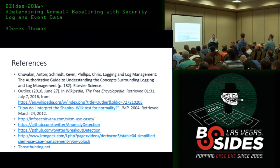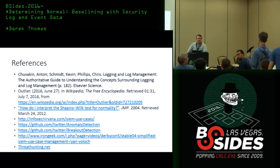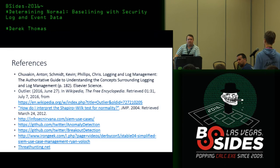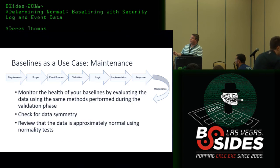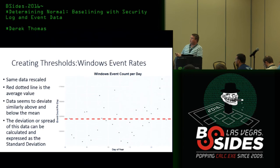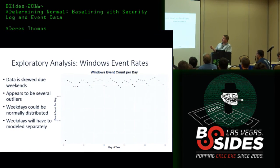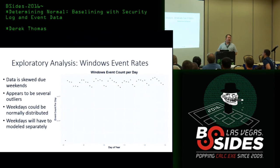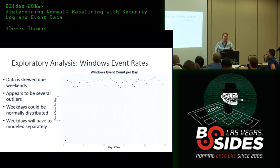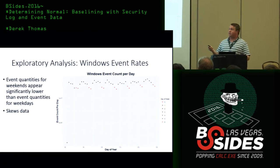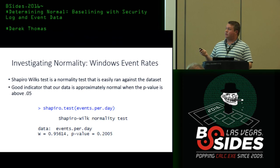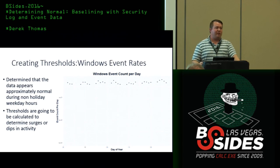Q&A: Someone asks whether it makes more sense to separate weekday and weekend data rather than drawing a mean across both — so you only evaluate weekend data on a weekend-only graph. Absolutely — you determine that through exploratory analysis, and in some cases it may not change from weekend to weekday. Once I determined which data points were weekdays, this later graph contains only weekdays. You do the same exact process for weekends separately. I just didn't go into the weekend baseline in this presentation for brevity.